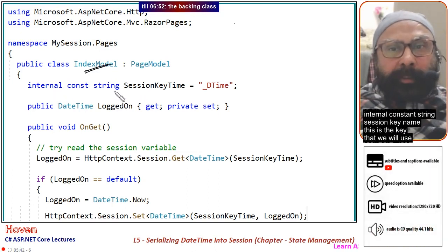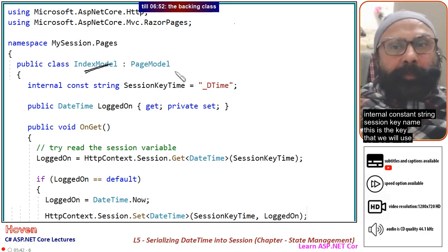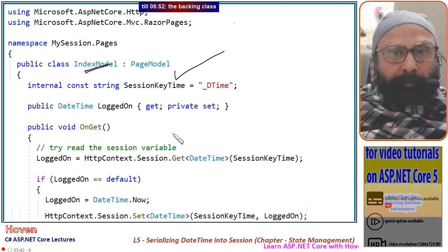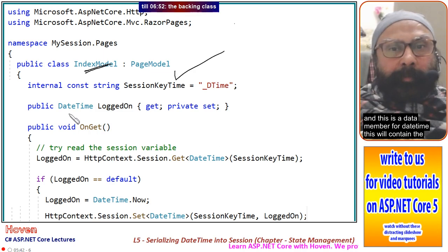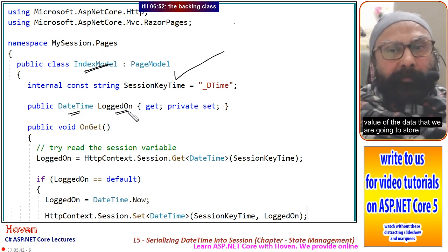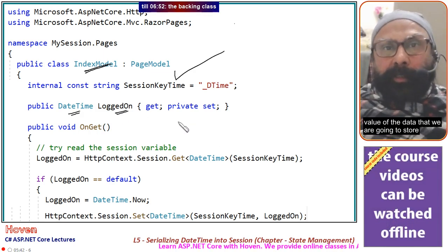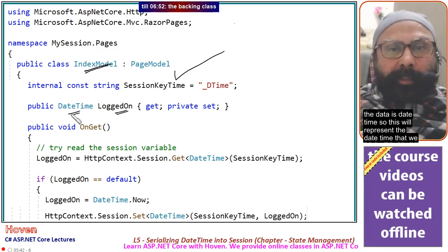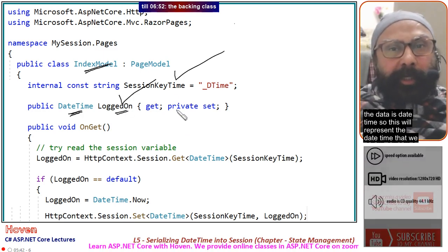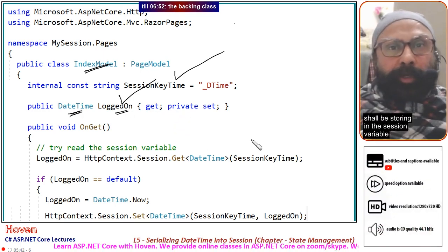And here internal const string SessionKeyName. This is the key that we will use. And this is a data member for DateTime. This will contain the value of the data that we are going to store. So this will represent the DateTime that we shall be storing in the session variable.